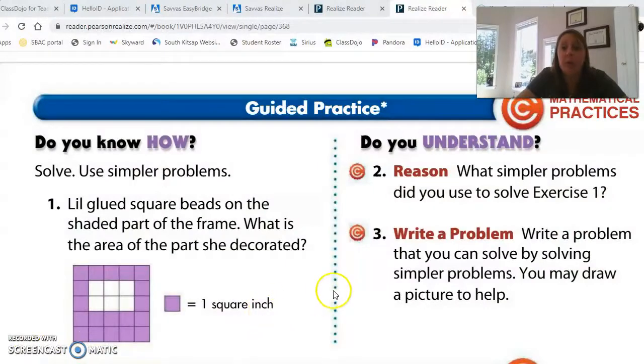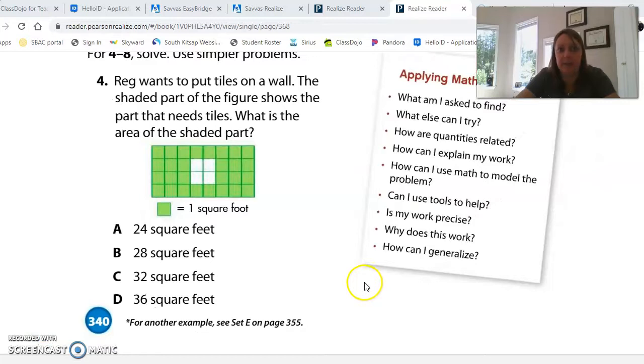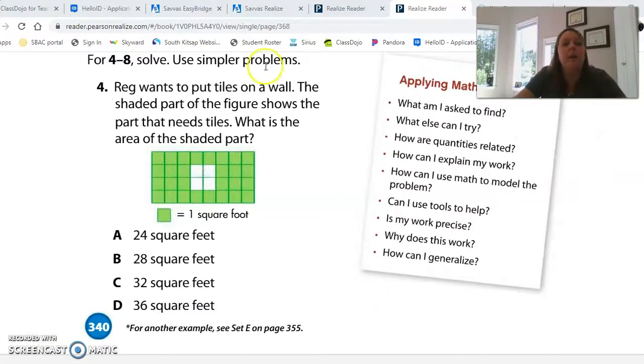All right, we're going to skip number three because that's a write-your-own. If you would like to make one up for your parents, that could be really fun. Especially if you were able to print out the centimeter grid paper. That would be a great choice. Mom and dad would probably get stumped, I bet. All right, number four.